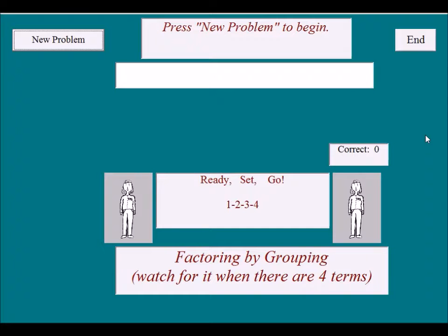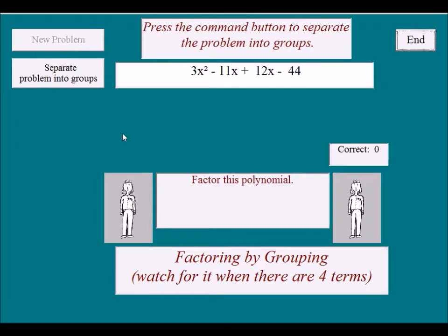The clue that you want to deal with factoring by grouping is the fact that you don't have a trinomial - you have four things to factor.